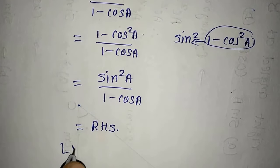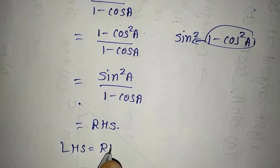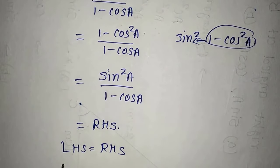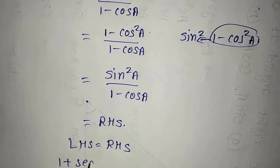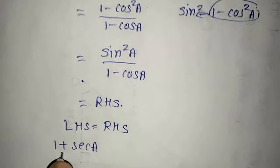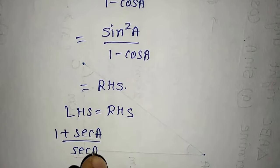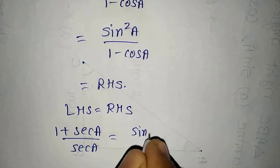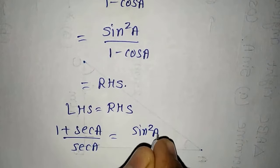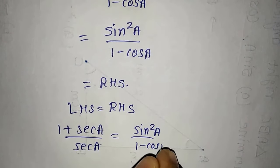We can say LHS is equal to RHS. Hence, 1 plus sec A upon sec A is equal to sin square A upon 1 minus cos A. Proved.